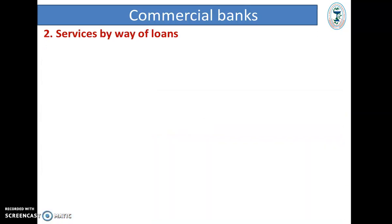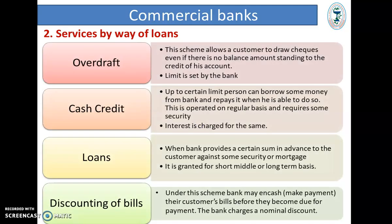Second type: Services by way of loans. They provide four types of loans — Overdraft, Cash Credit, Loan or Term Loan, and Discounting on Bill Facility. First, Overdraft Facility: this scheme allows a customer to draw a check even if there is no balance standing to the credit of his account — that is, the bank permits him to overdraw his account.